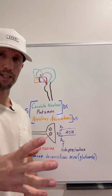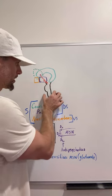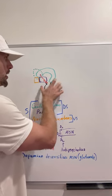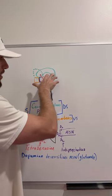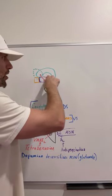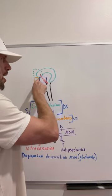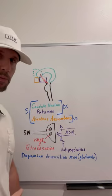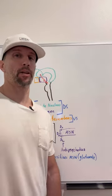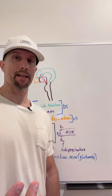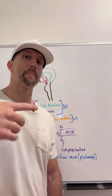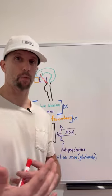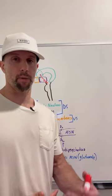To give some context: here's our brain stem — the medulla, pons, and midbrain — and right above that we have our thalamus and hypothalamus. Just to the outside of that we have some subcortical nuclei that are part of our basal ganglia. When you hear basal ganglia, think movement. The basal ganglia affects our movement — when we want to move and when we don't want to move.